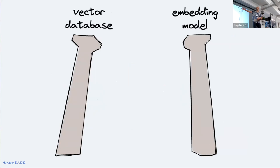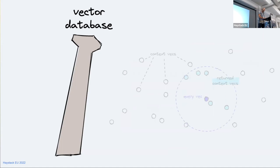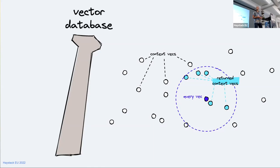On the vector database side, you're basically looking for a database which is going to allow you to retrieve similar vectors as quickly and accurately as possible, with nice features such as metadata filtering and good data management. We're going to have a load of vectors — all of these represent some piece of information, whether that's text, images, or something else.